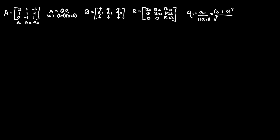The magnitude of A1 is the square root of 2 squared plus 1 squared plus 0 squared. So Q1 equals the vector (2, 1, 0) transposed over the square root of 4 plus 1, which is root 5. This gives Q1 as (2 over root 5, 1 over root 5, 0) transposed.